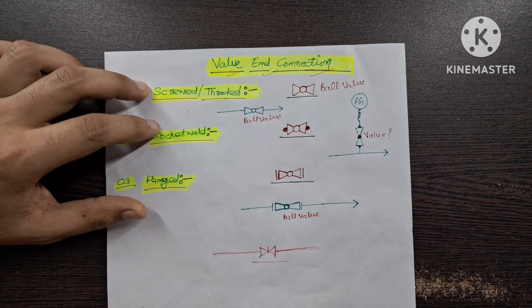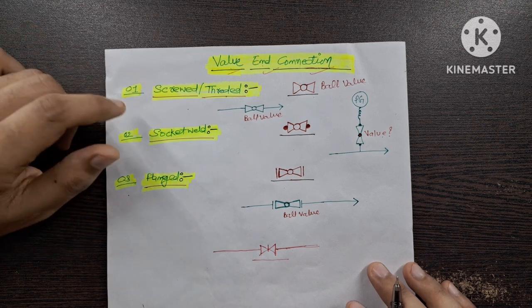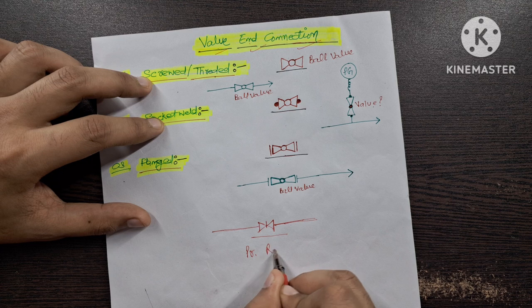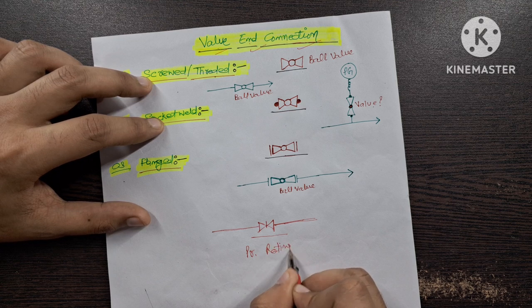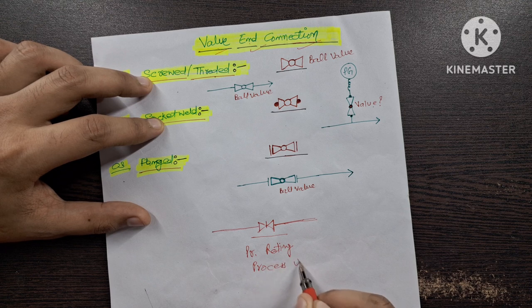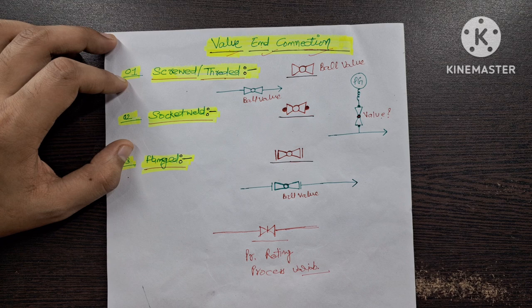There are many factors which decide which type of end connection to use. For example, your pressure rating — that is very, very important. Also process variables: which type of fluid you are using, what is the pressure, what is the temperature, and whether your fluid is toxic or not. If it leaks, it could damage the environment as well as impact human beings.